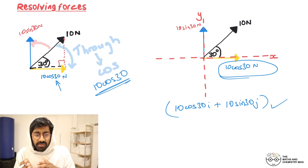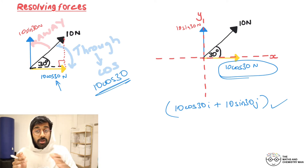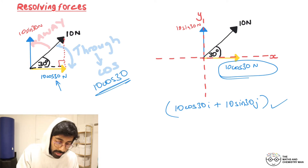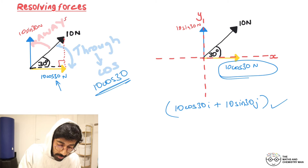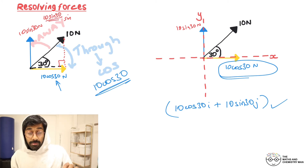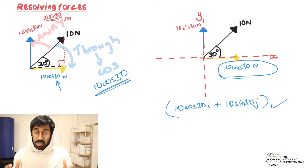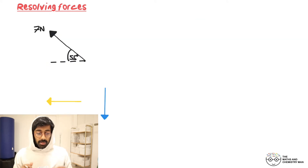Going the other way to find the y direction — we're going away from the 30 degrees. When you go away, it's sine. So that would just be 10 sin 30. Make a note of that: through the angle = cos, away from the angle = sin. This gets you there much quicker than drawing triangles every time.